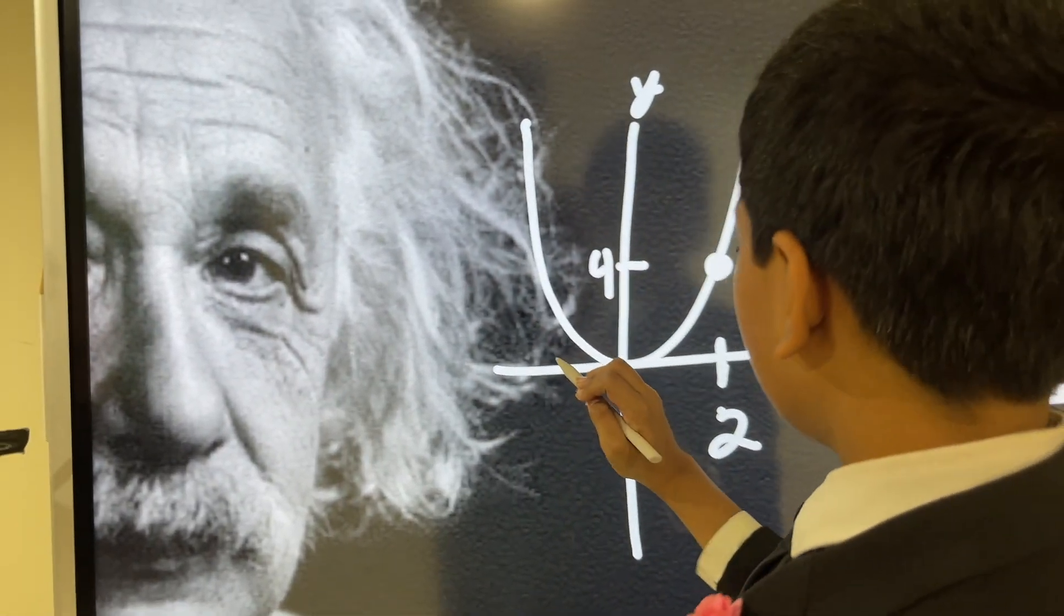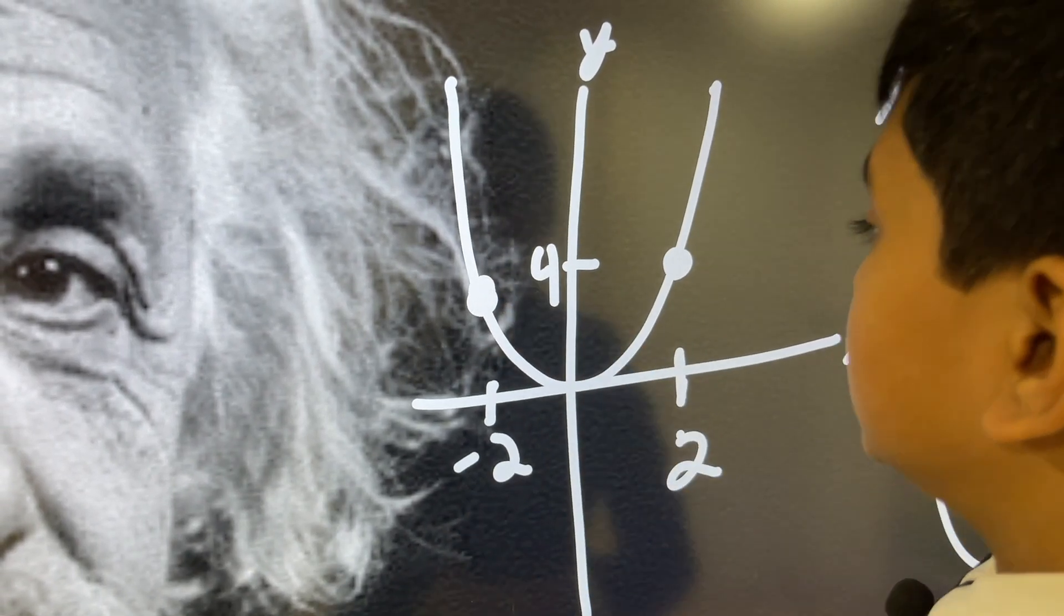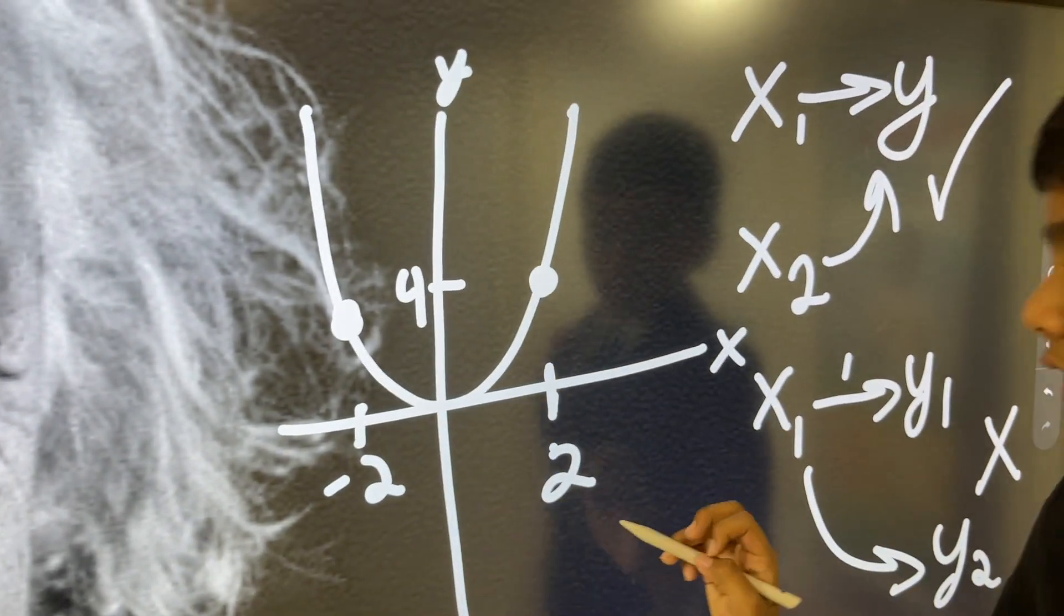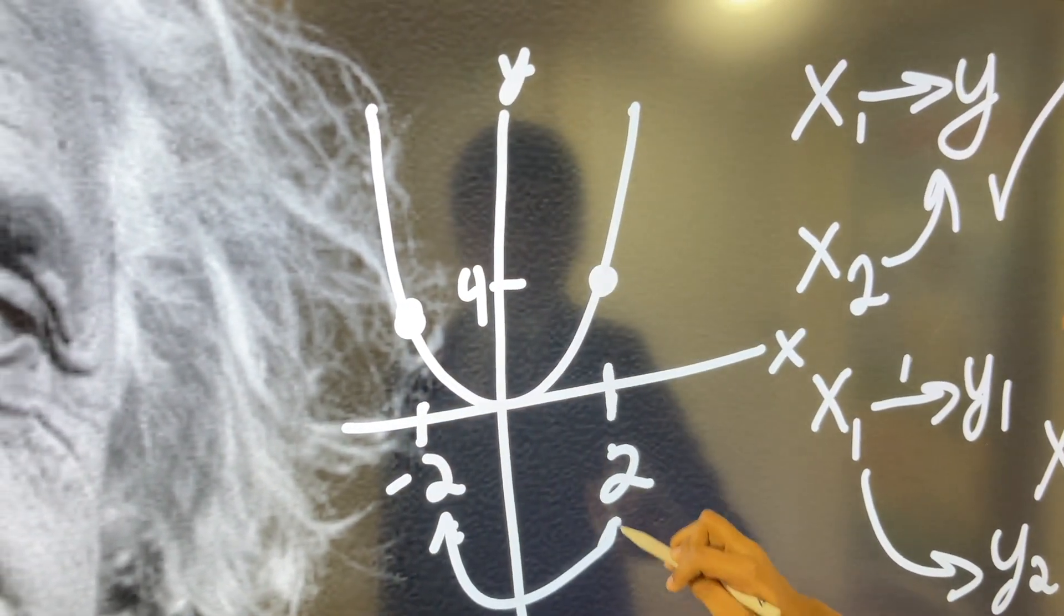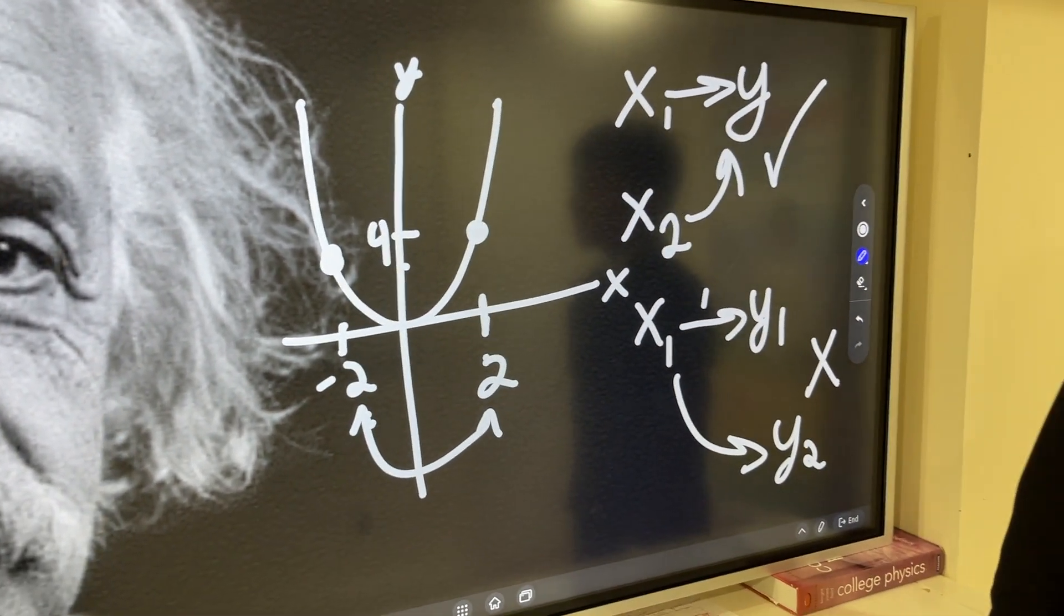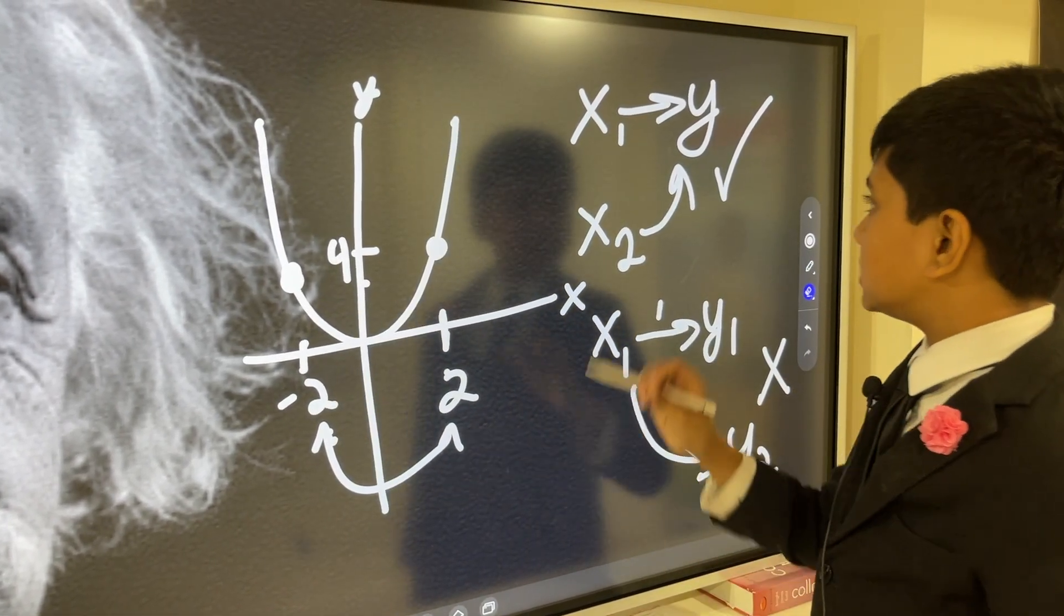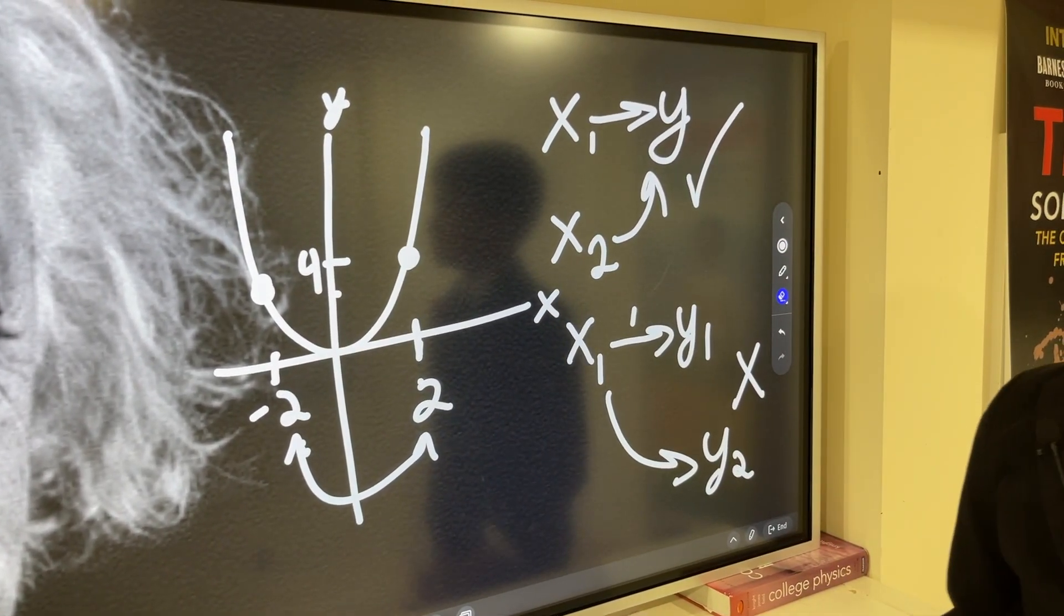This x right here, which is negative 2, also gives me this y, which is 4. So, even though these two different inputs give me the same output, this is still a function. That still counts as a function, even if, coincidentally, two inputs happen to have the same output.